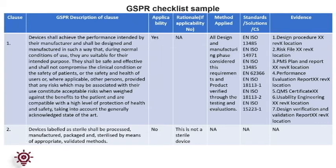The GSPR is part of the technical documentation that should be submitted to the notified body to pursue certification. For demonstration of conformity, we first need to assess the applicability of the GSPR checklist. If applicable, we provide the relevant document and reference sources. If not applicable, we give a justification stating why. Then the method to demonstrate compliance is noted. For applicable standards or common specifications, the relevant harmonized standard or common specification is cited, and the relevant document with revision or version number must be mapped, with cross-reference locations of such evidence shared.